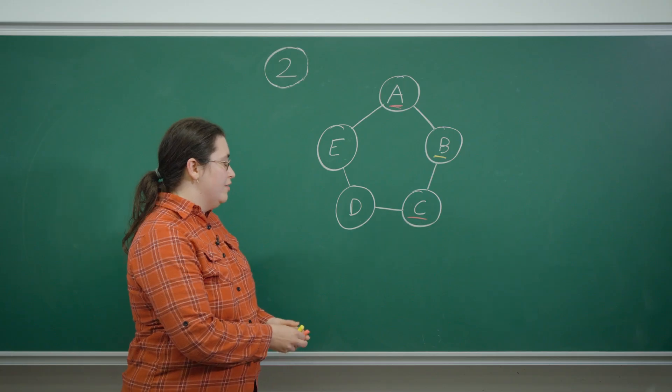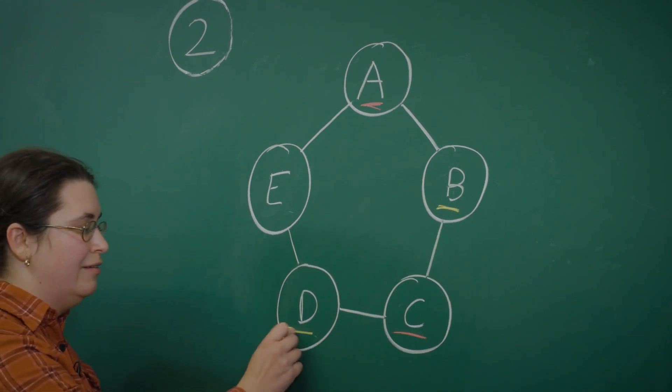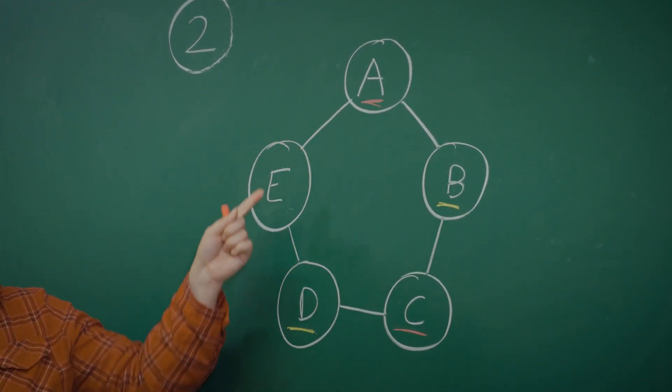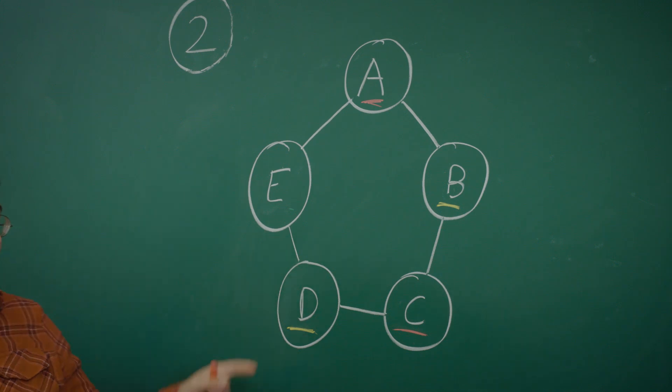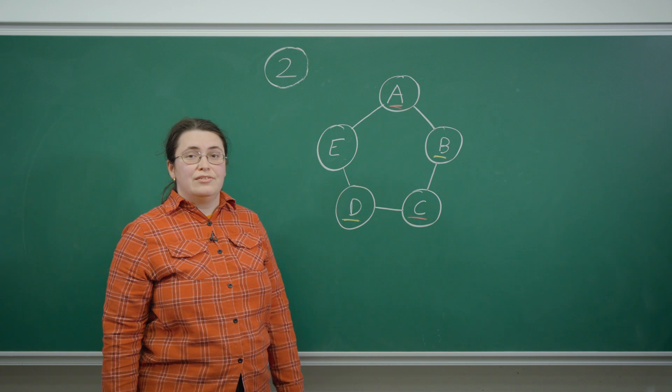We then know that D has to be yellow because it's adjacent to the red C. And then E cannot be either red because it's adjacent to A, or yellow because it's adjacent to D. Therefore we've run into a problem and it's not possible to color the diagram with only two colors.